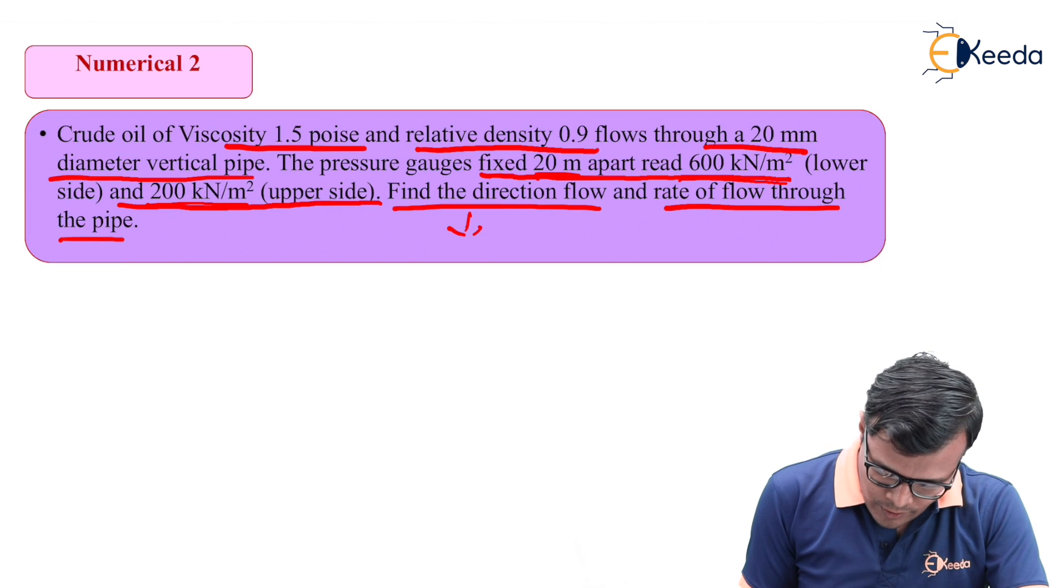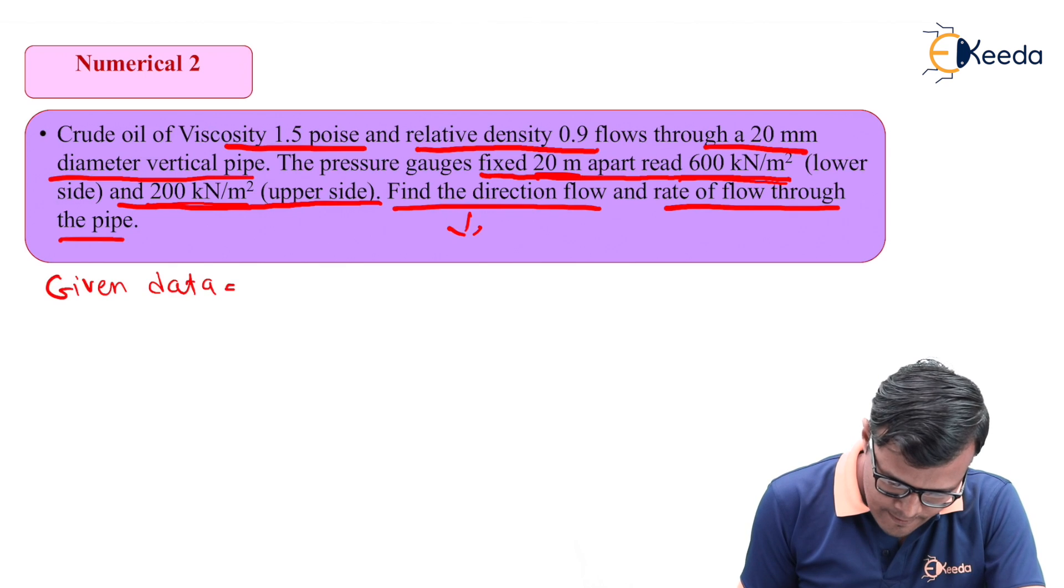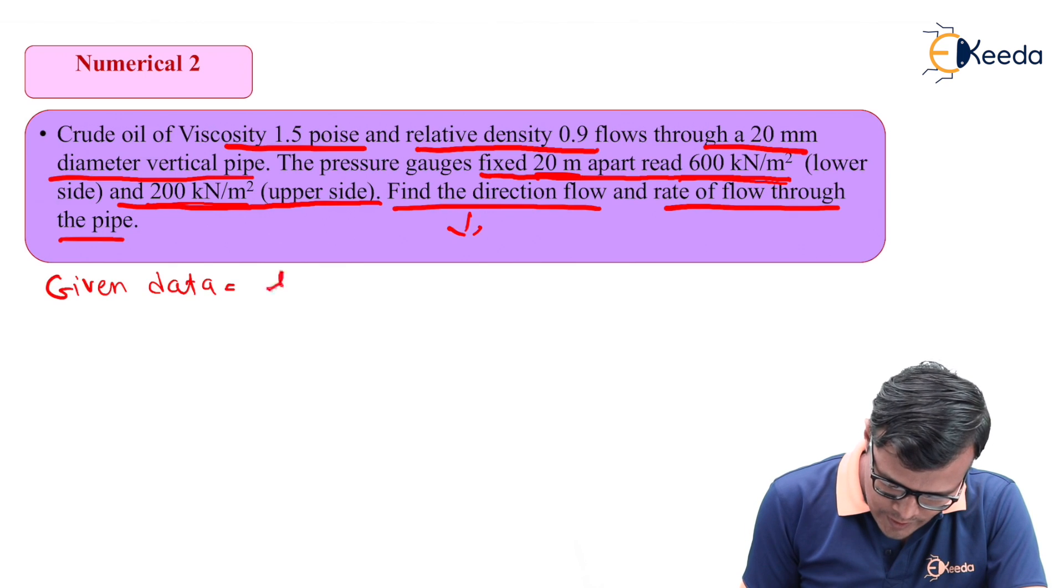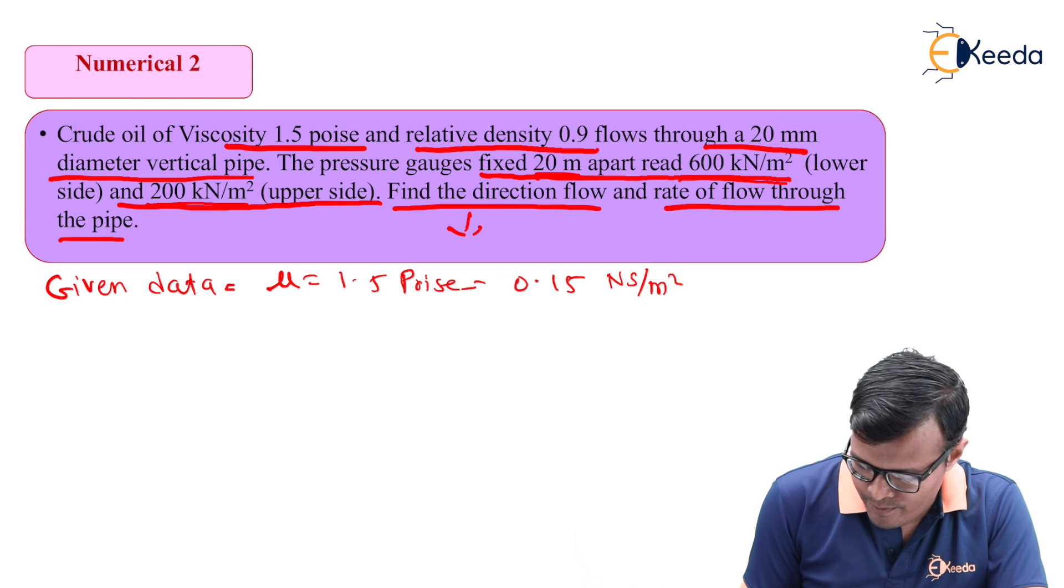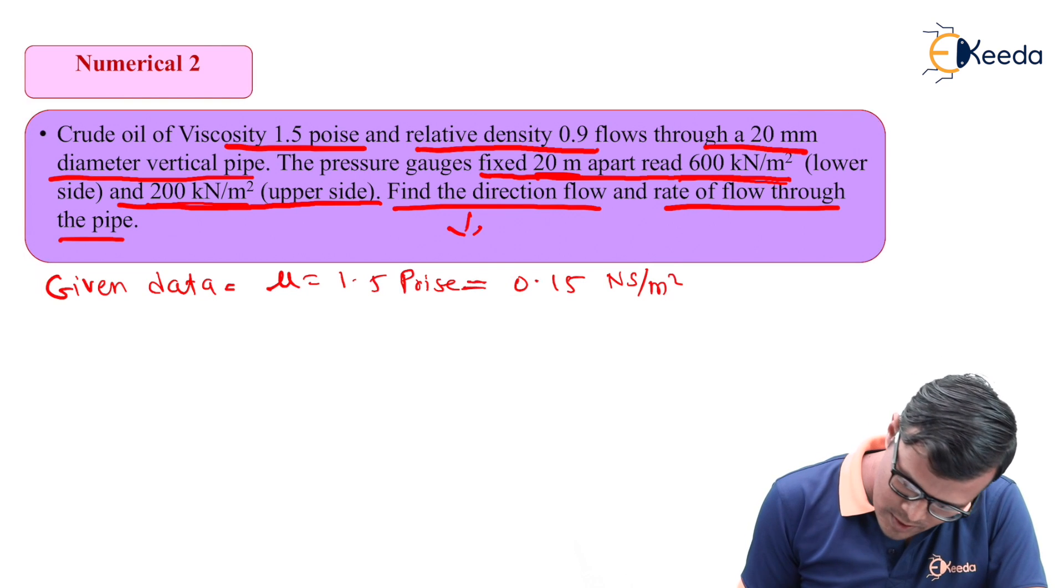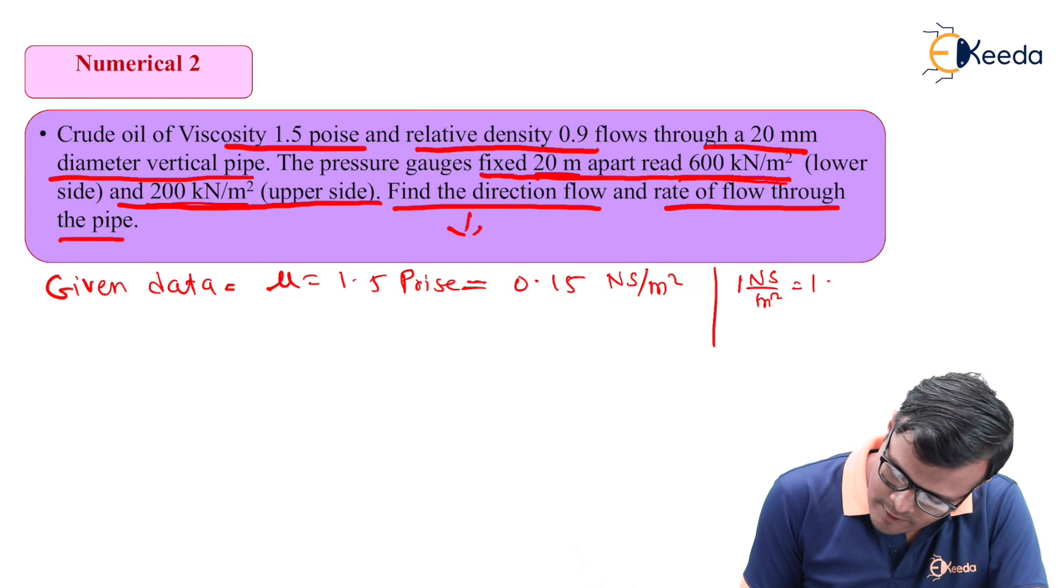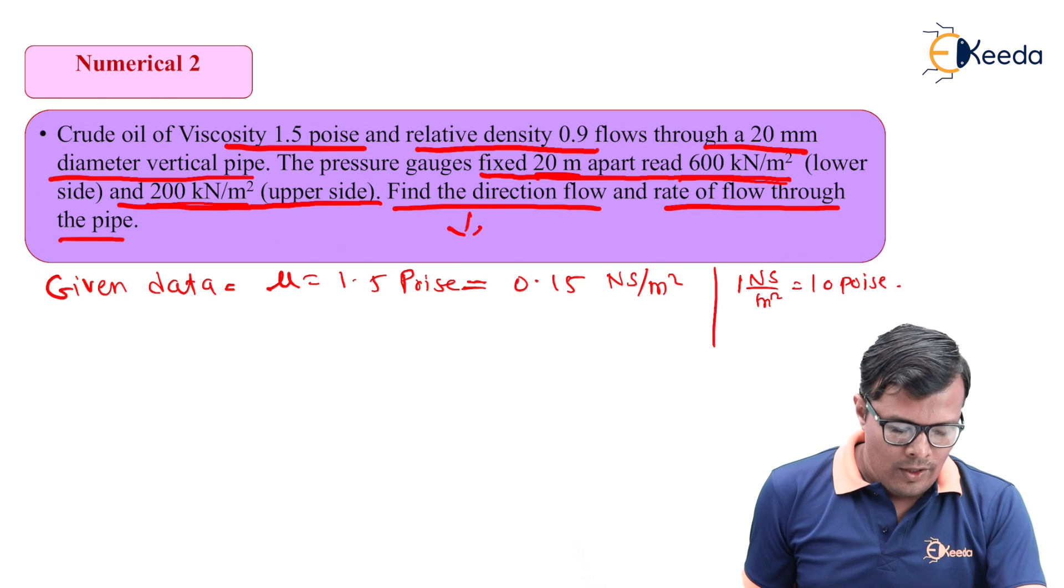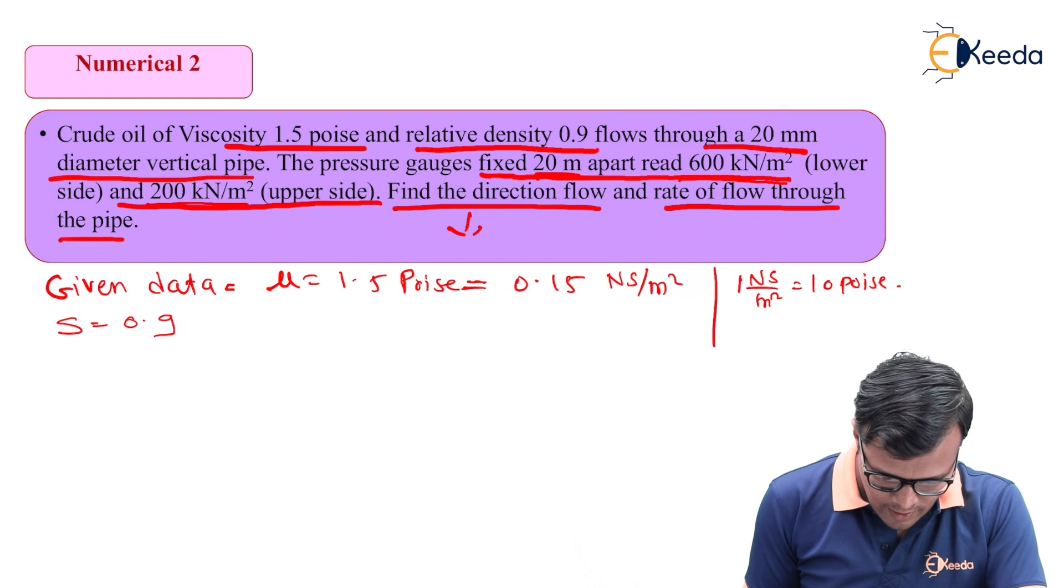First, let's note down the basic given data. Mu is 1.5 poise, which is 0.15 N second per meter square, because the relation is that 1 N second per meter square equals 10 poise. S, the specific gravity, is given as 0.9.